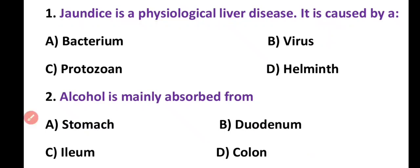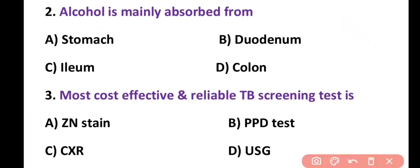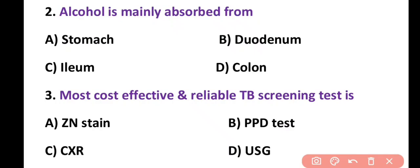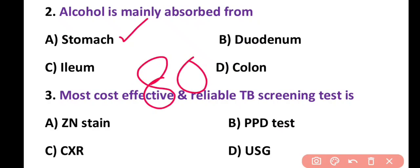Question 2. Alcohol is mainly absorbed from: stomach, duodenum, ileum, or colon. Correct answer is option A. Almost 80% of alcohol absorption occurs from the stomach.